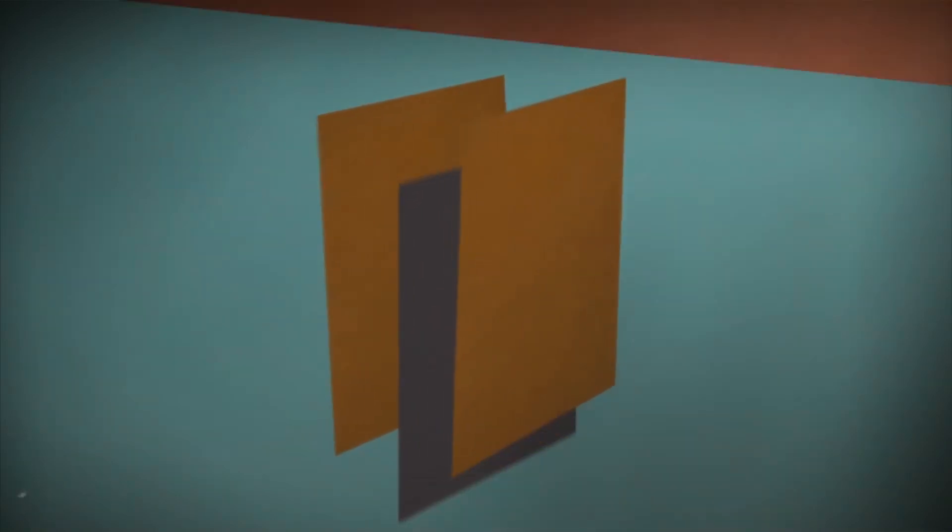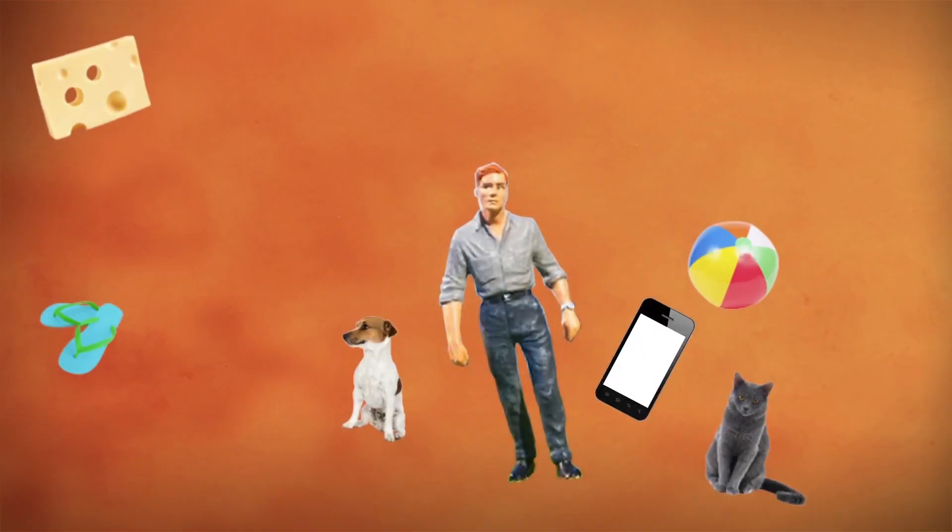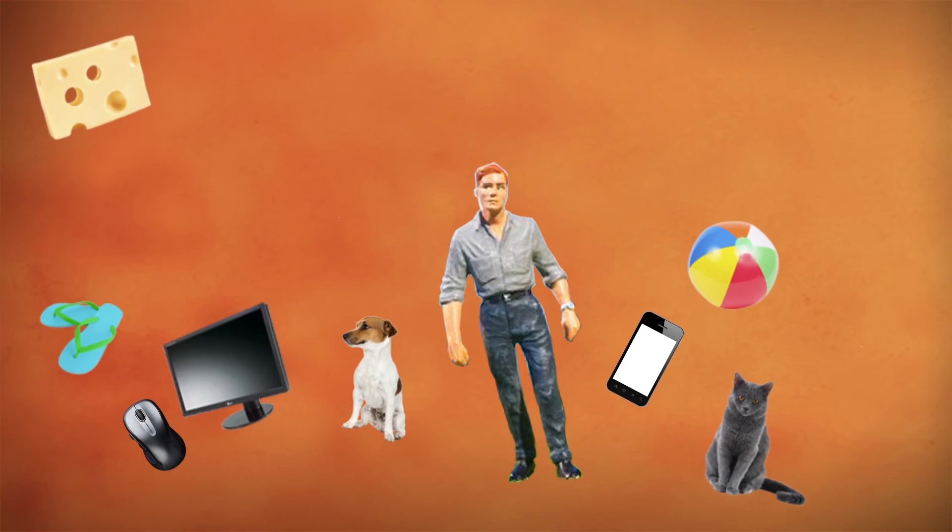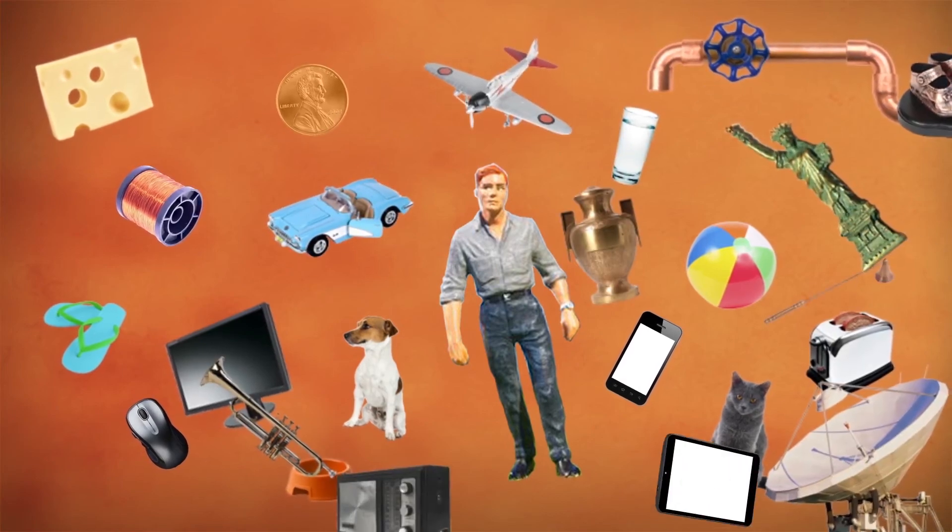These cathodes are stripped away from the stainless steel plates, corrugated, strapped together into 5,000-pound bundles, and whisked away to their final destinations. And finally, they're turned into cell phones, computer components, copper pipes, copper wire, and many other things that make our modern lives possible.